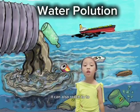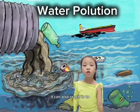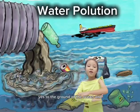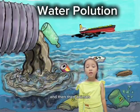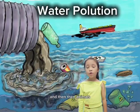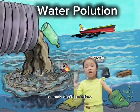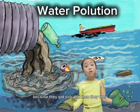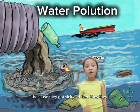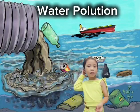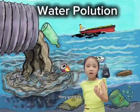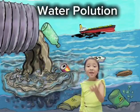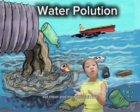Because the toxic can also reach to the ground of the sea, the ground of the ocean, and animals don't like it. They think their habitat is very bad because they got sick. They got polluted, and then other fish eat them, and then they're sick too, and then they die.